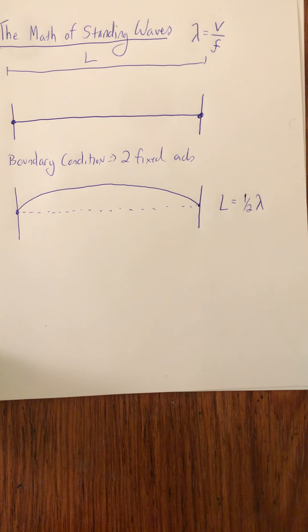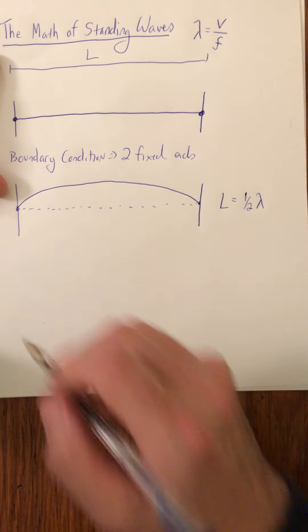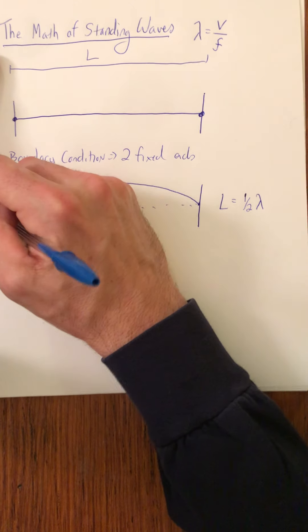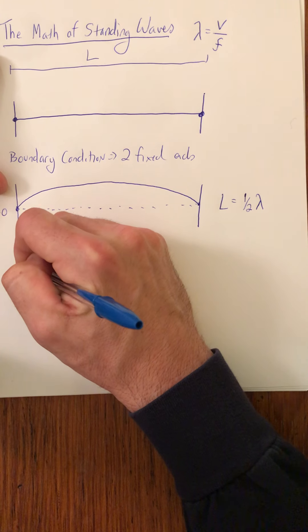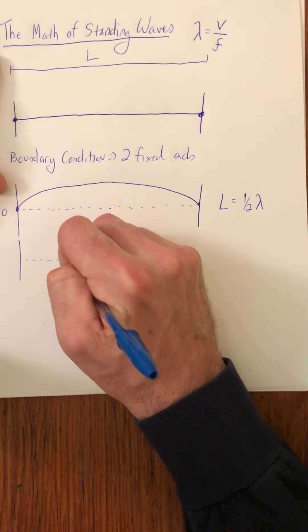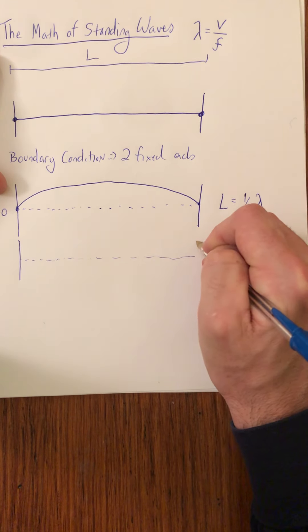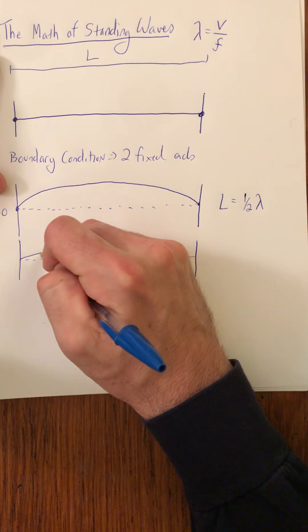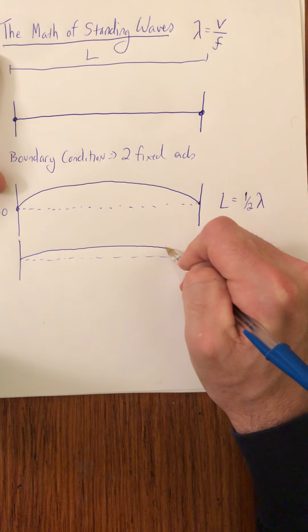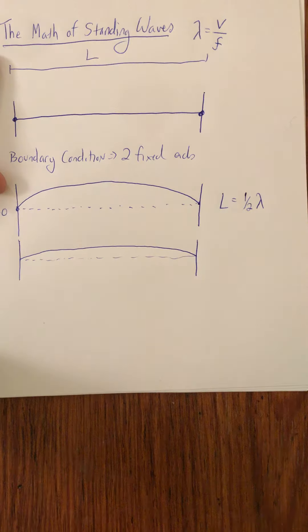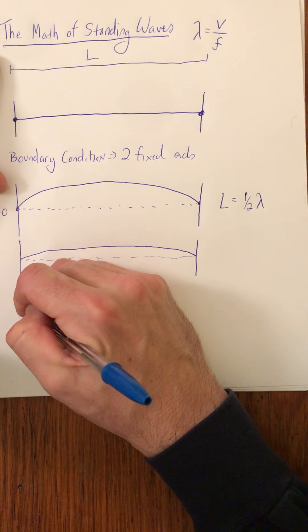Now, what I'm going to draw here is a time-lapse about what's happening with the medium through time, because this is a standing wave. So if this is t equals zero, a little bit time later, if we look at this, what we will see is that wave moving, or that medium moving, back down towards the equilibrium position.